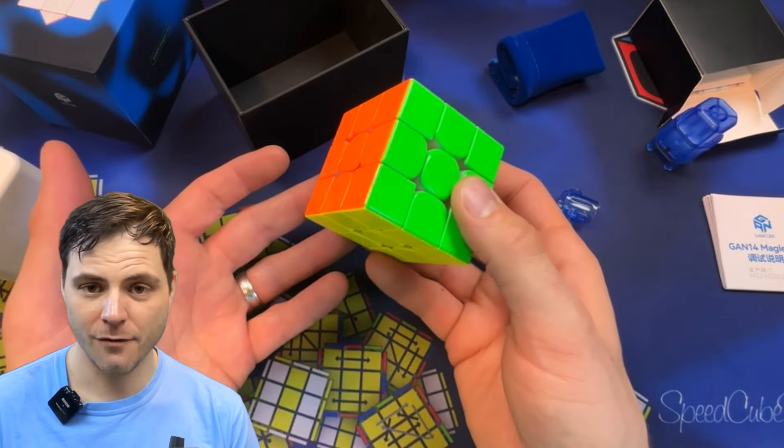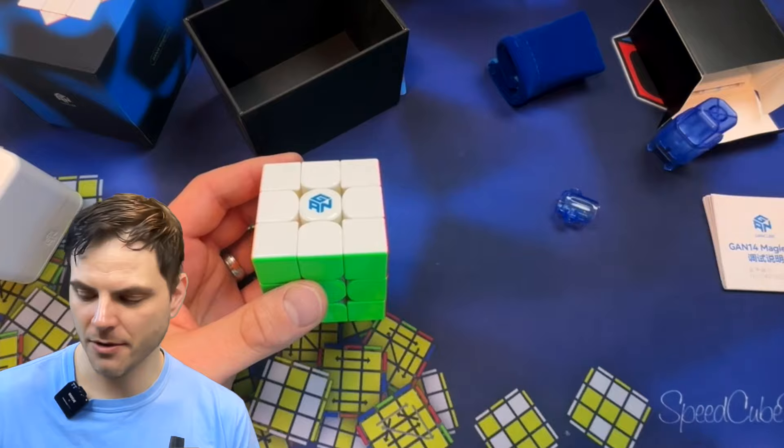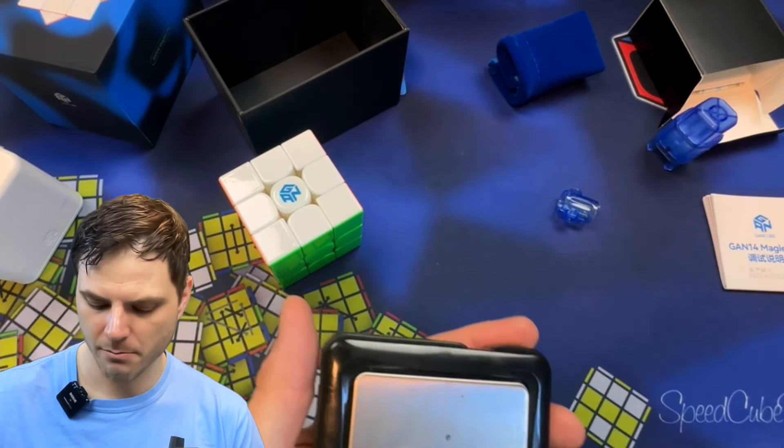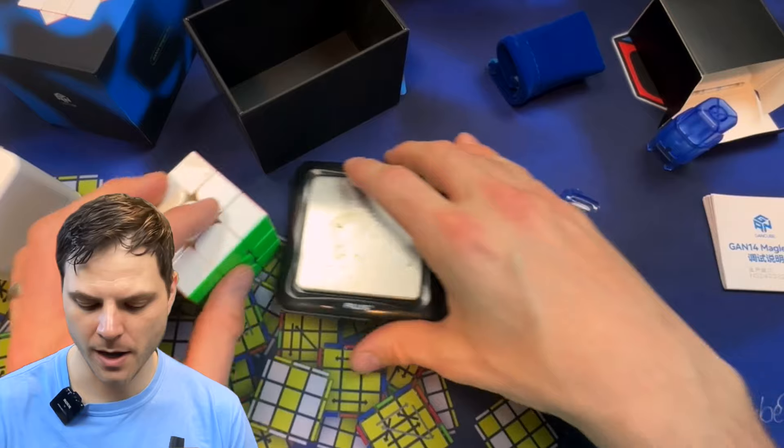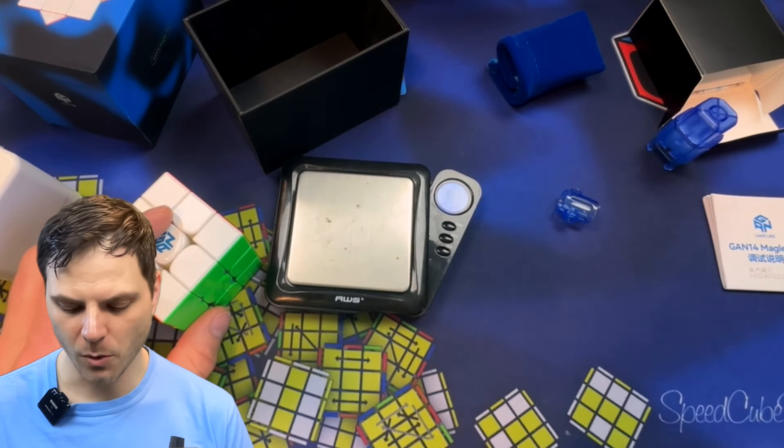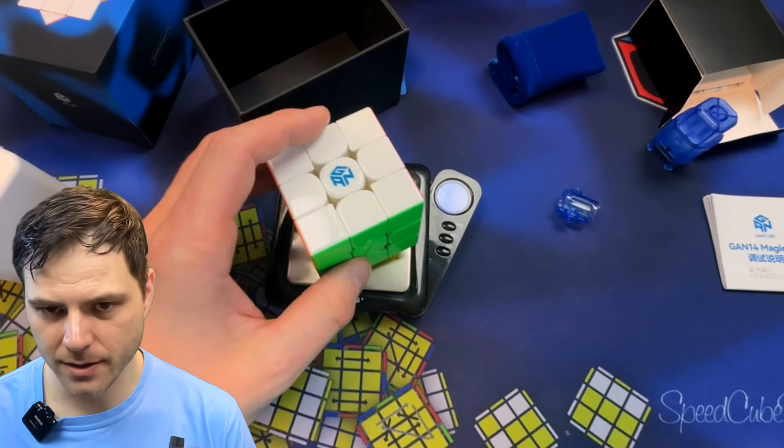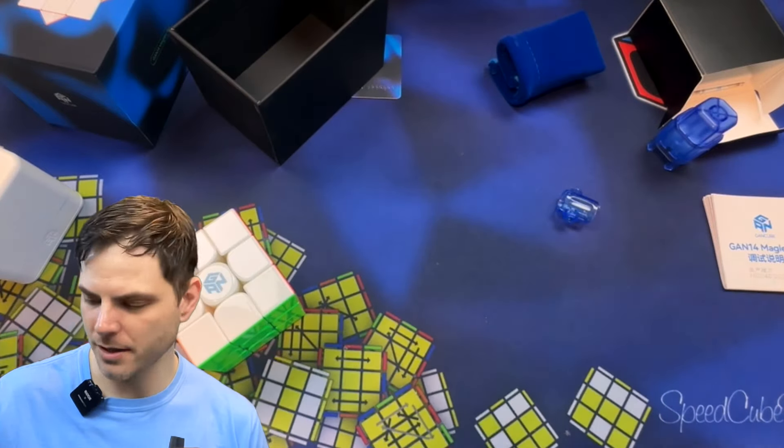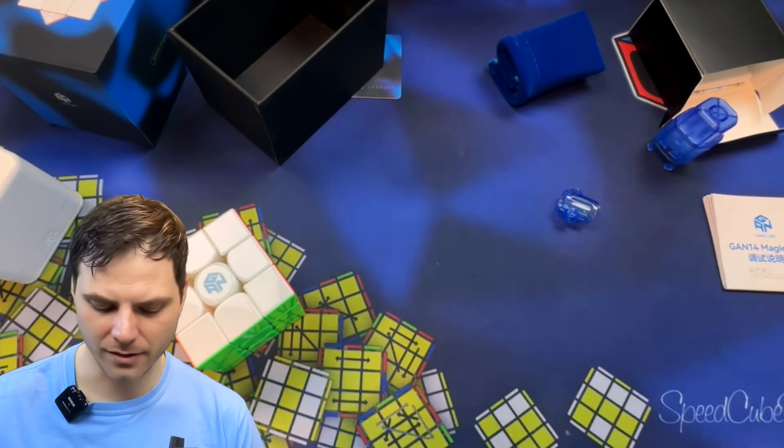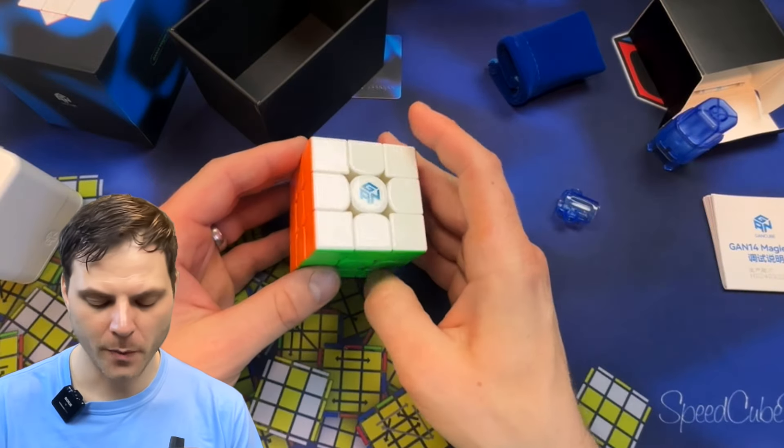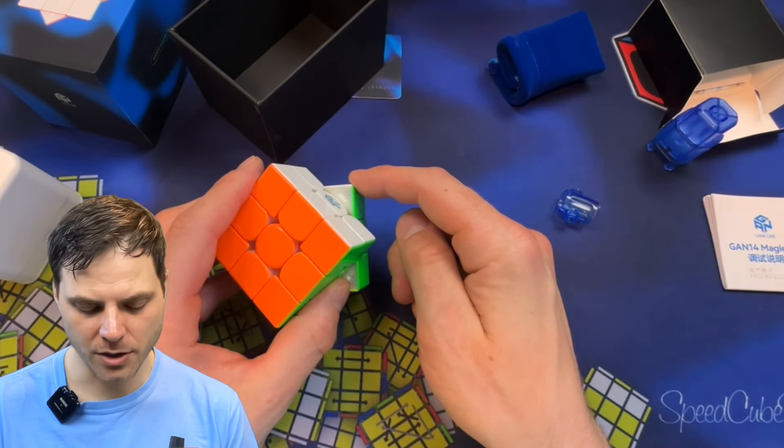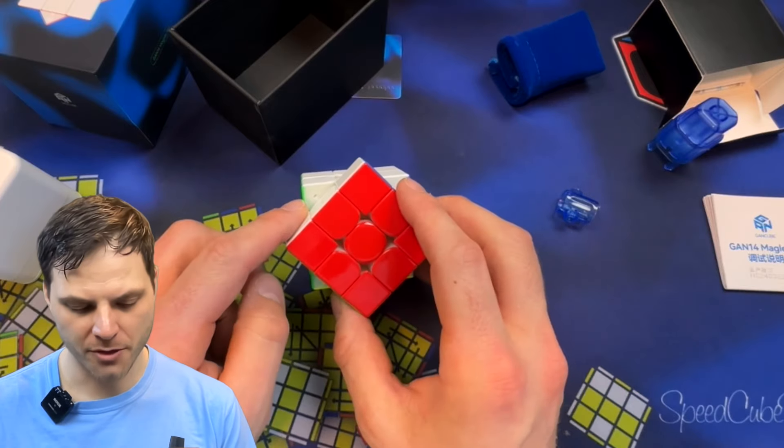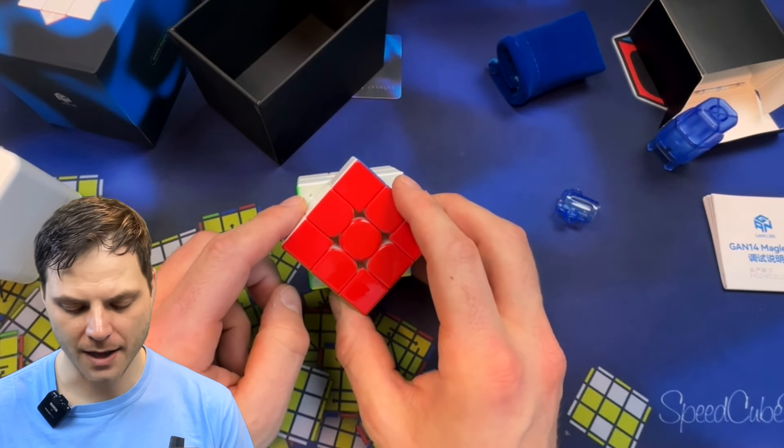So GAN 14 Maglev Pro. A couple things about it. It is 56 millimeters like pretty much every other major cube they have had for a while. As far as weight goes, we are looking at 71.5 grams, so on the lighter side but not super hyper light. It's not in the 60 grams, but it's close. We have UV coating, one through six tensions for the corners.